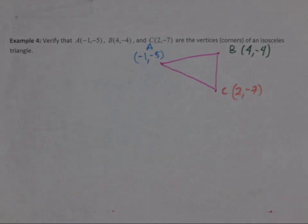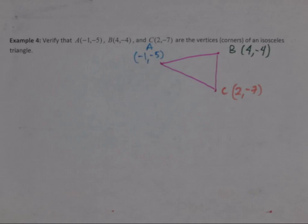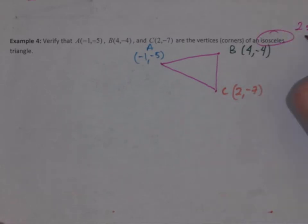We're asked to verify that this triangle formed by these three corners is actually an isosceles triangle. Our previous knowledge we need to remember here is that an isosceles triangle has two sides that are the same length.